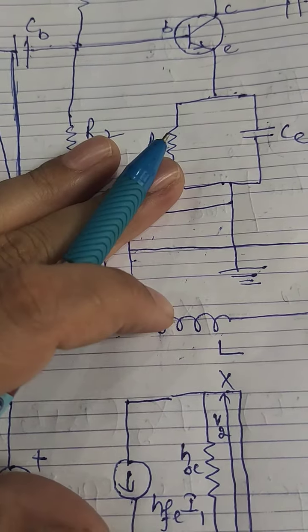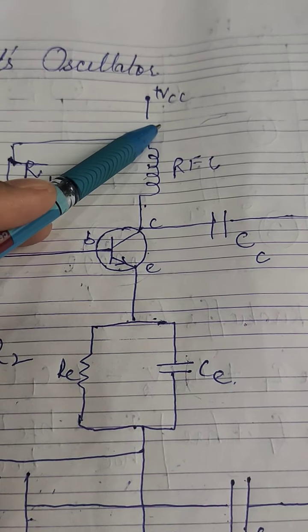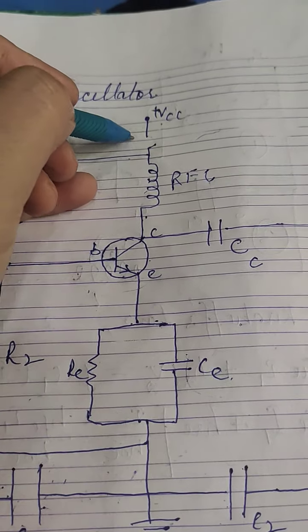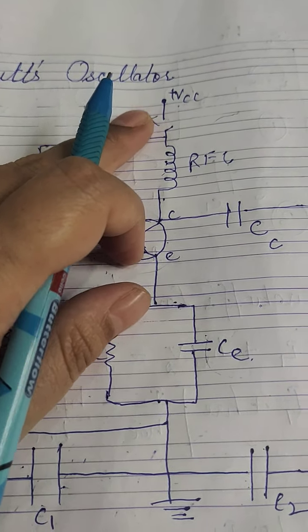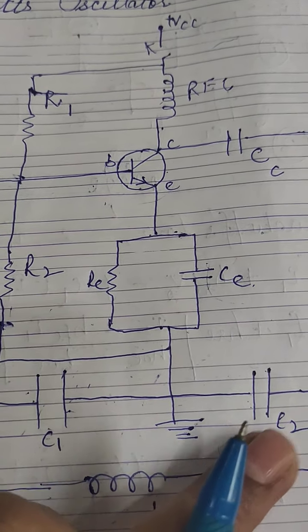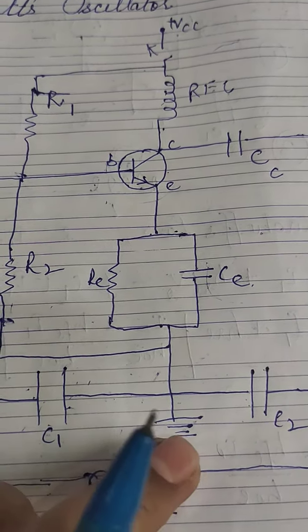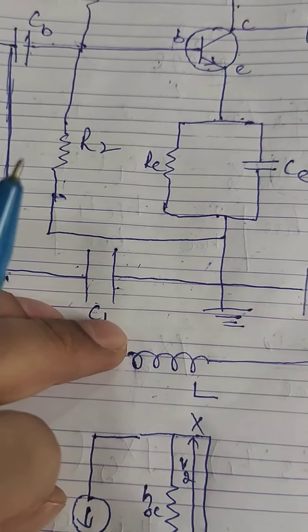Let us discuss the circuit operation. When we close the key K, current starts flowing and it begins charging capacitors C1 and C2. When these capacitors are fully charged, they discharge through inductor L, setting up a natural oscillation in the tank circuit.